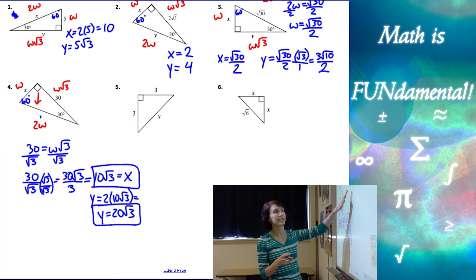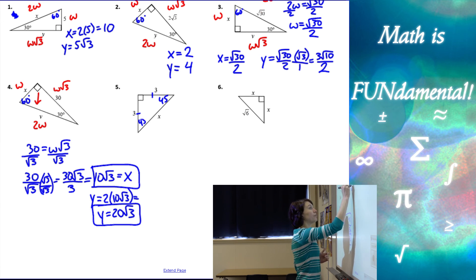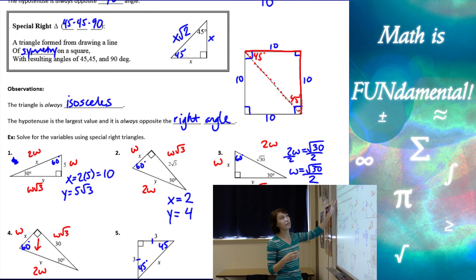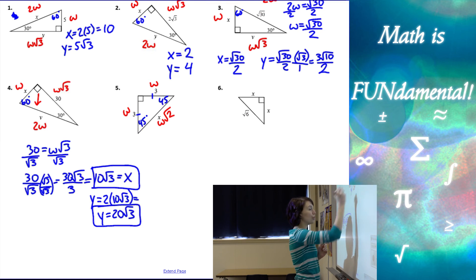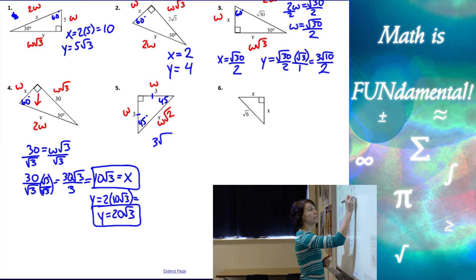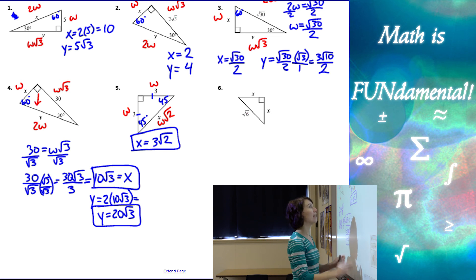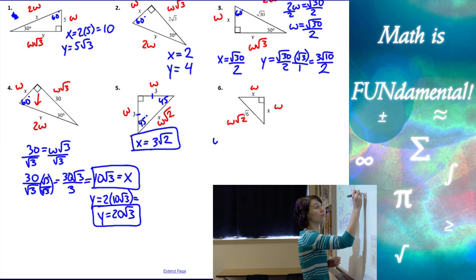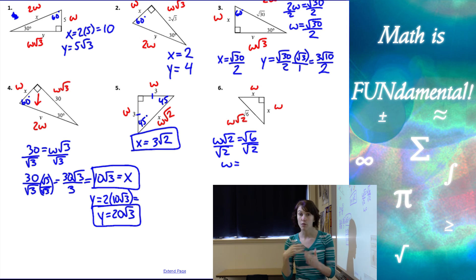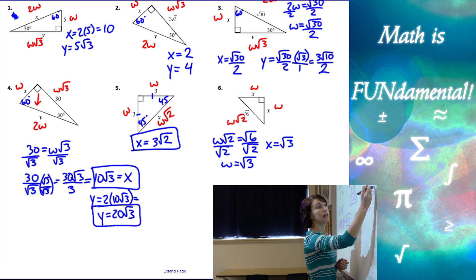The last two examples don't give us any angles, but they tell us the triangle is isosceles. If those two sides are the same, it has to be a 45-45-90 triangle. The pattern is w, w, and w root 2. If w is 3, then the hypotenuse is 3 times root 2. For the next one, w root 2 equals root 6. Because both values are under the square root, we can divide 6 by 2, making w equal root 3. So x equals root 3.